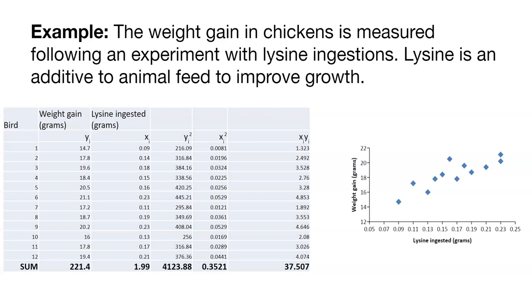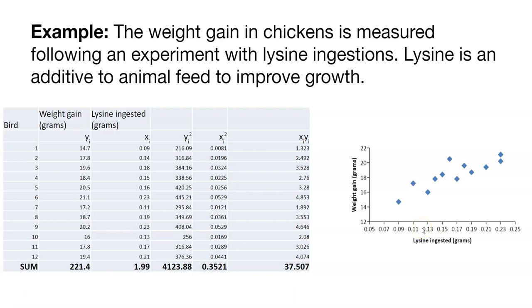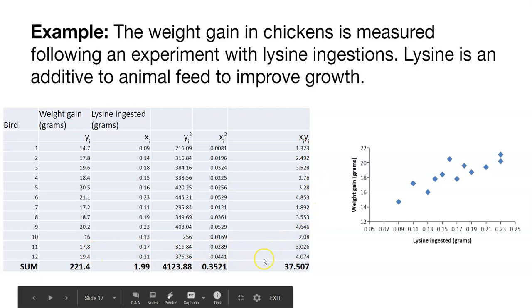There's a great example we're going to go through for the rest of this slide deck, looking at the weight of chicken gains. We have weight gains in chickens from an experiment after they ingested lysine. Lysine is an additive given to many animals to promote their growth and to make them healthy. The chicken ingested a certain amount of lysine measured in grams, and after the experiment, after a certain number of days, we measured the weight gain in those chickens. All of the data are found in this table. We have 12 different chickens, weight gains, lysine ingested, and then some other calculations: each yi squared value, each xi squared value, each xi times yi value. You'll need to find out what the sums of all those values are for a given variable.